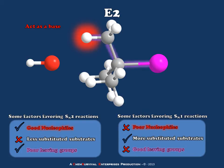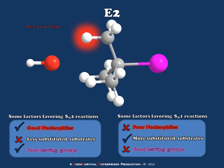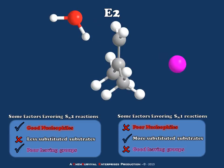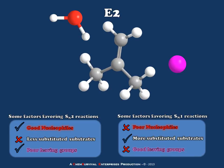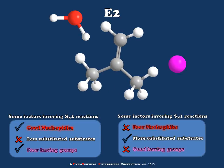The base will almost always attack whichever alpha proton is at a 180-degree dihedral from the leaving group, because the molecular orbitals in that orientation are properly aligned for that electron flow to occur. You can see that by removing the proton, a pi bond is created, and therefore an alkene is synthesized in the process of displacing the leaving group. We'll talk more about the geometry of different E and Z isomers that can form in E2 reactions a little bit later.